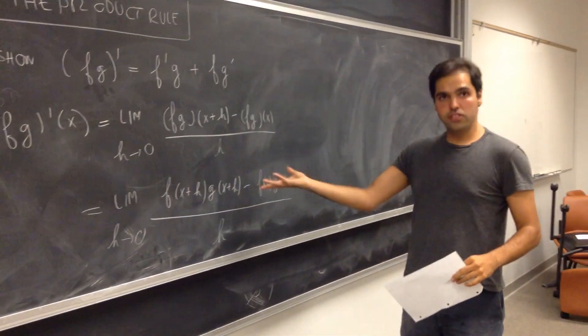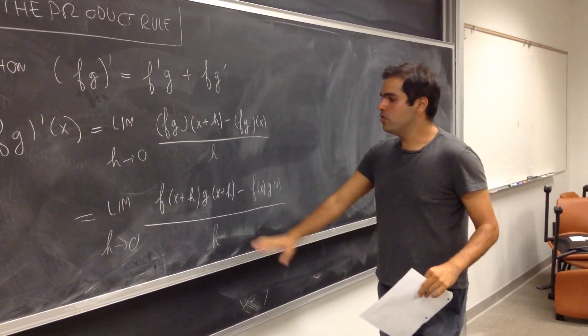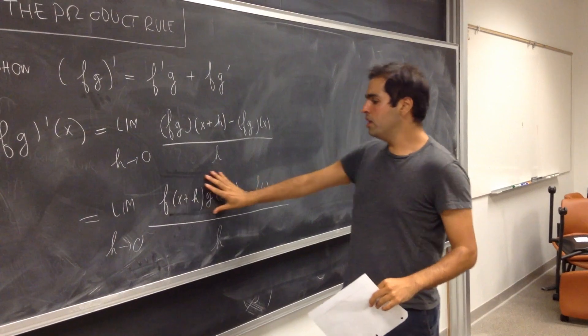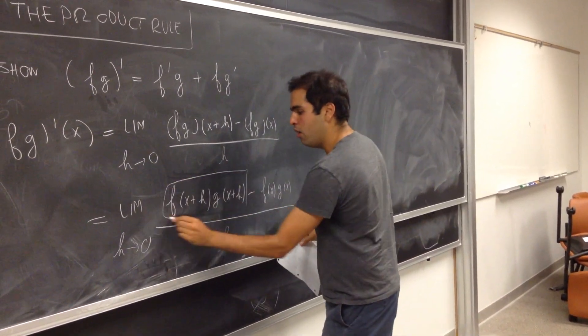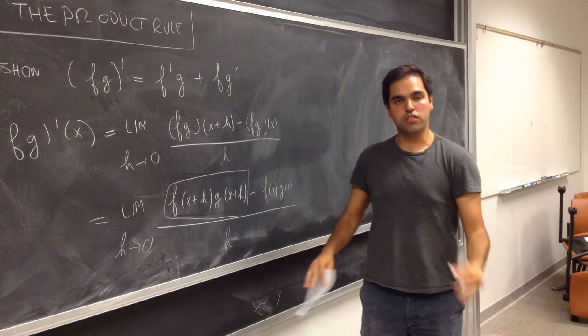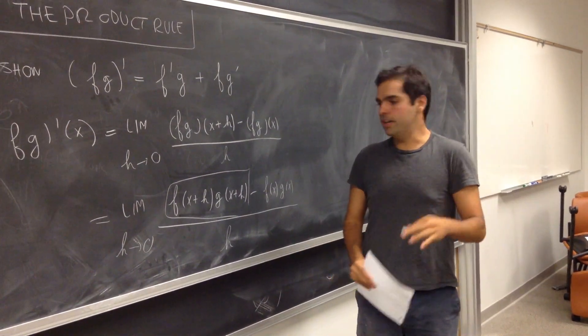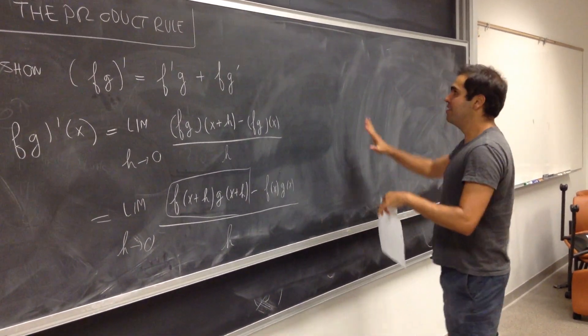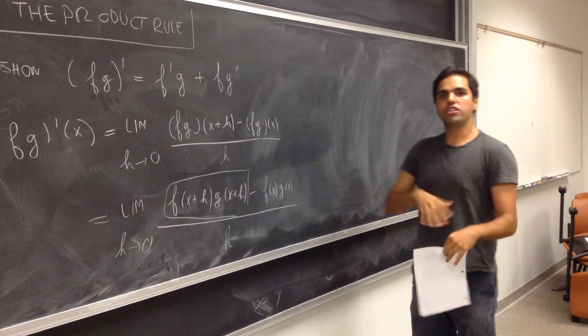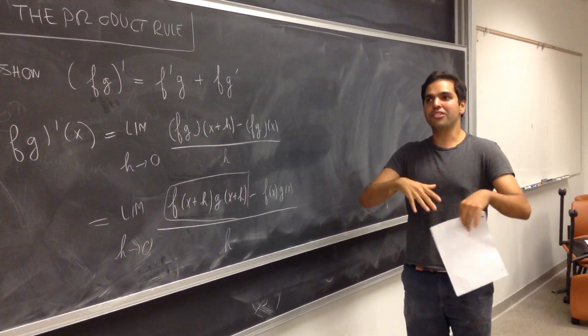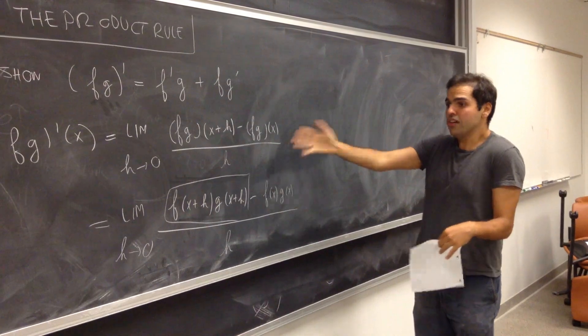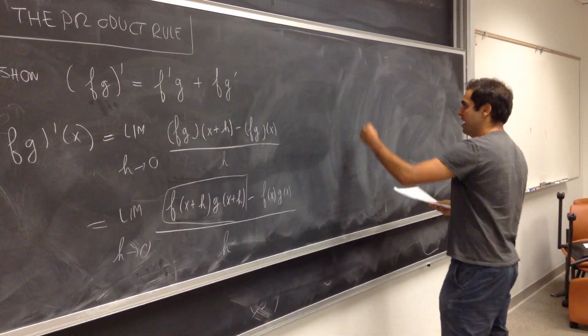And here comes this really cool trick. We somehow want to rewrite this in terms of four smaller parts which we can control in a better way. And for this, let me draw you a picture, which might not represent reality, but it will give us the correct formula in the end.